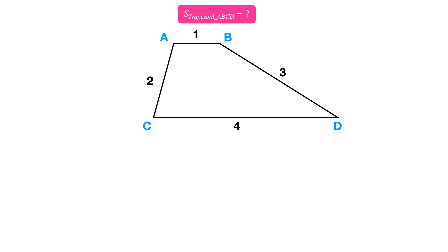Hello everyone, let's take a look at this interesting geometry problem together. Given a trapezoid ABCD with side lengths of 1, 2, 3, and 4, we are asked to find the area of the trapezoid.